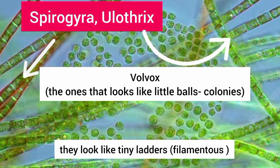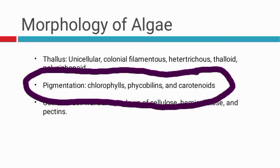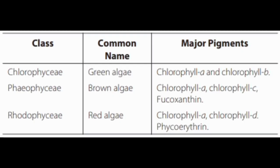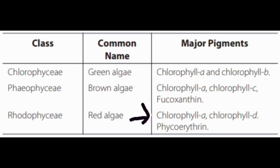Algae have different pigmentation — that is chlorophylls, phycobilins, and the likes. Green algae are made up of chlorophyll A and chlorophyll B pigments. Brown algae have chlorophyll A and chlorophyll C with phycoxanthin. Red algae have chlorophyll A and chlorophyll D with phycoerythrin.